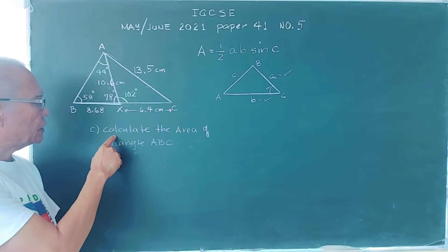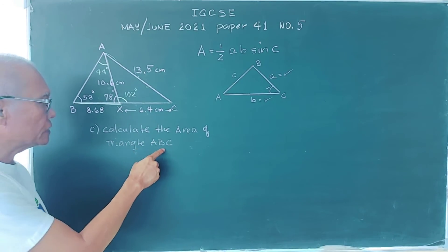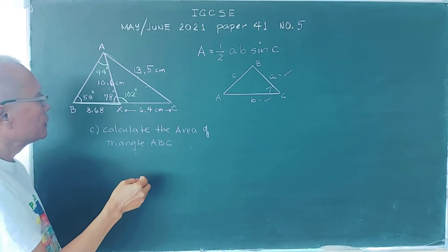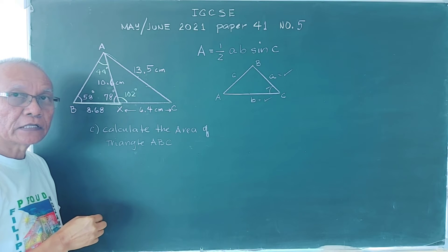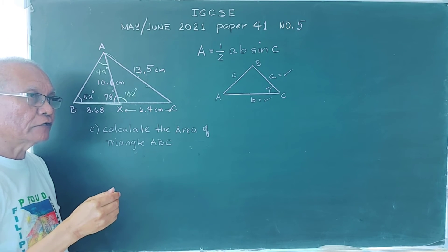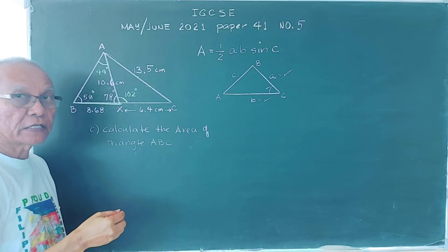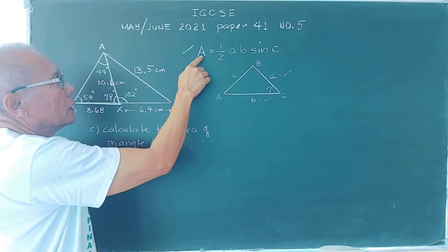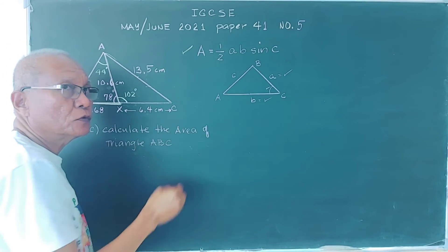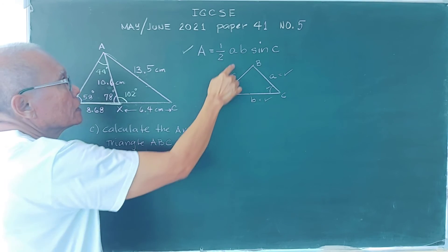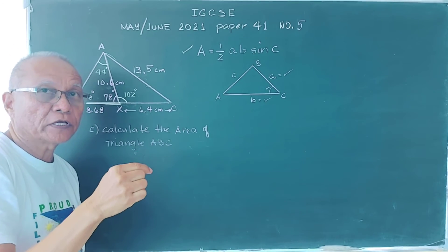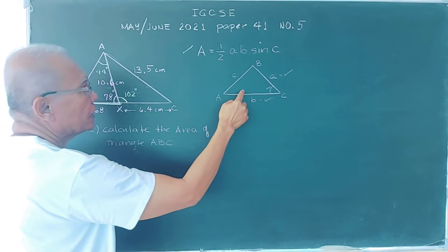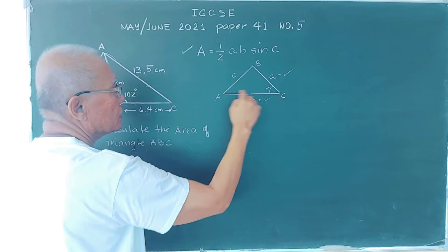Next, we calculate the area of triangle ABC. Since this is an oblique triangle, we cannot use the simple formula one-half base times height. Instead, we use the formula: area equals one-half times two touching sides times the sine of the included angle between those two sides.